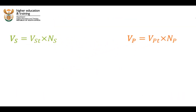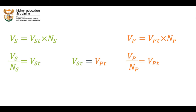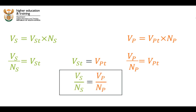Let's do some rearranging of these equations. We can rewrite each of the primary and secondary voltage equations in terms of the voltage per turn. But we know that the voltage per turn in each coil will be the same, which means we can combine these equations. We get that the voltage across the secondary coil divided by the number of turns in the secondary coil is equal to the voltage across the primary coil divided by the number of turns in the primary coil. Rearranging, the number of turns in the secondary coil divided by the number of turns in the primary coil is equal to the voltage across the secondary coil divided by the voltage across the primary coil. The ratio of the secondary to primary turns is equal to the ratio of the secondary to primary voltage.